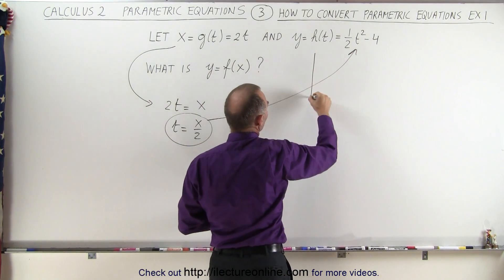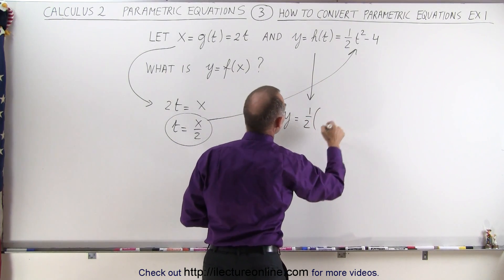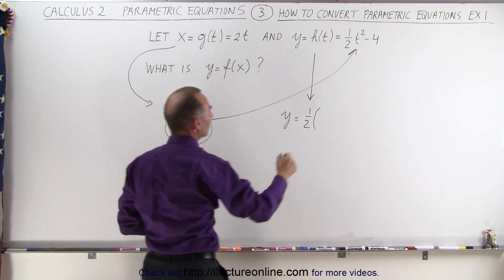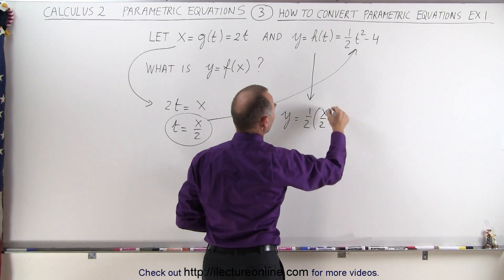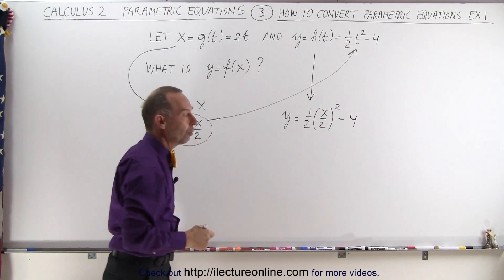So then this equation becomes as follows. We can say that y is equal to one-half times, instead of t we write what t is equal to in terms of the first variable, which is x over 2 quantity squared minus 4, and this will then give us the equation we're looking for, y in terms of x.